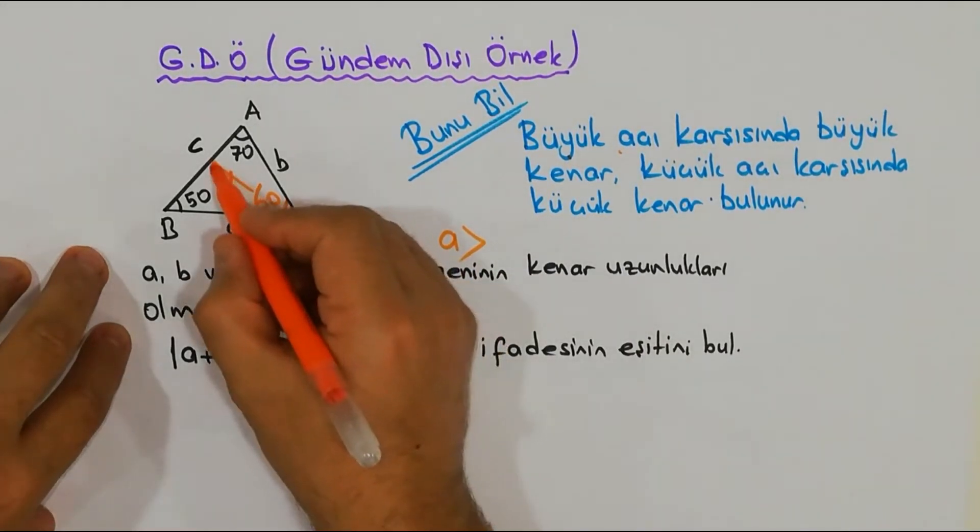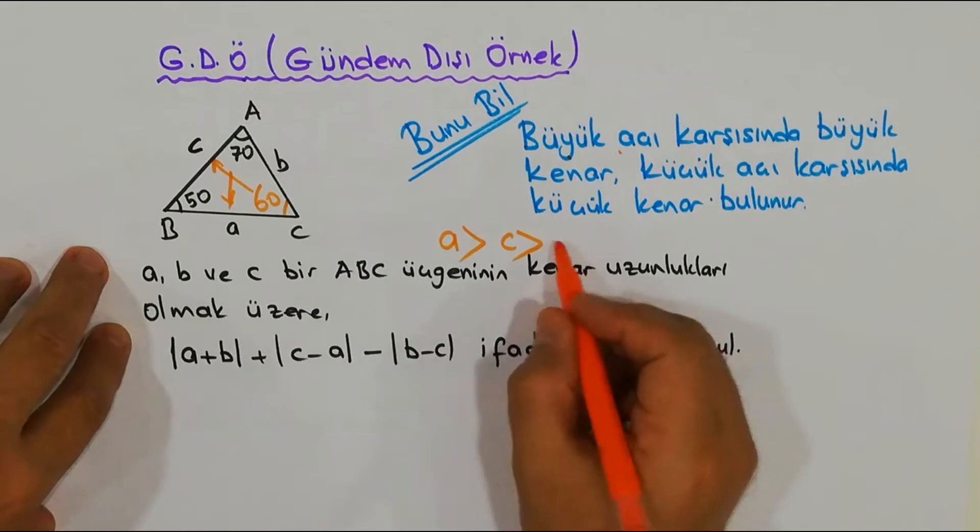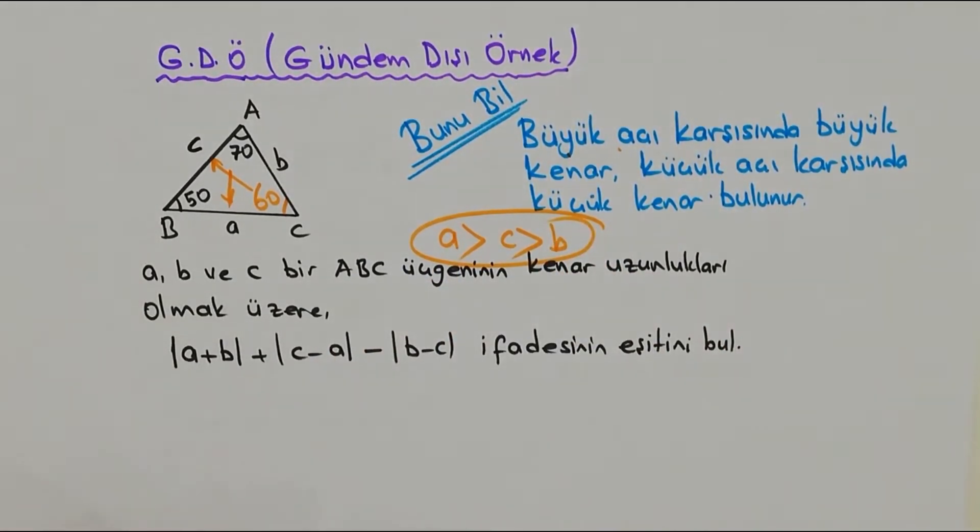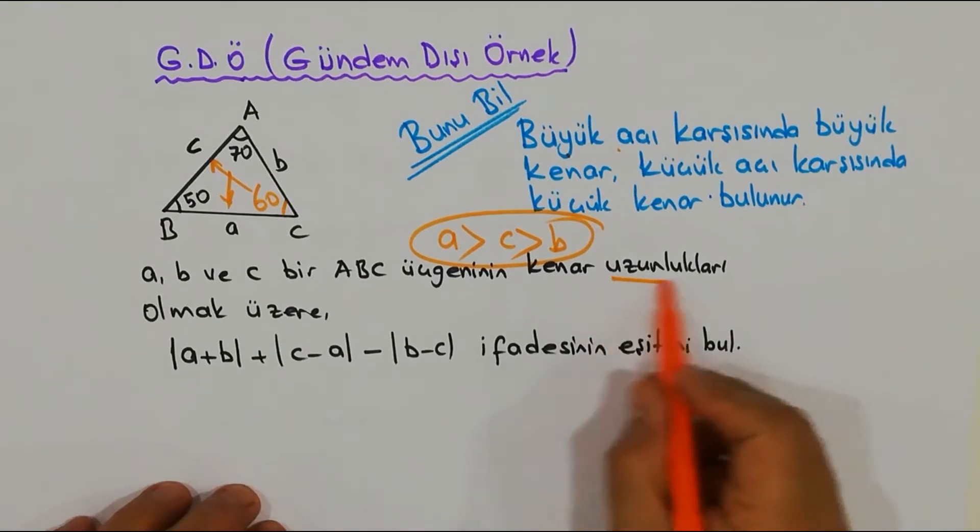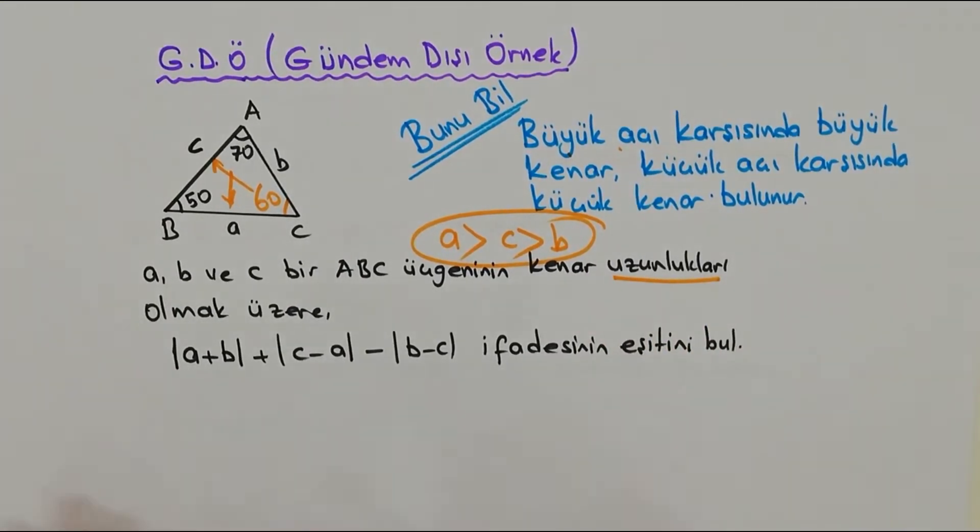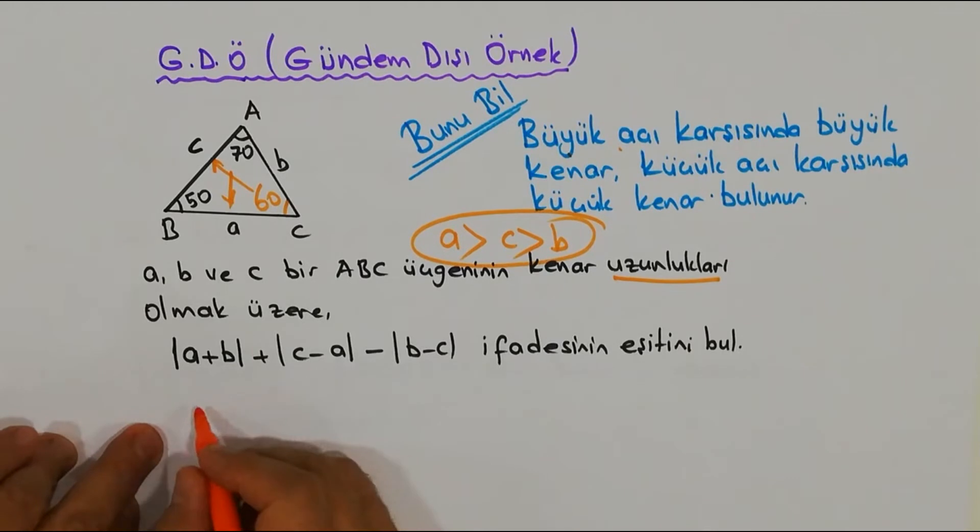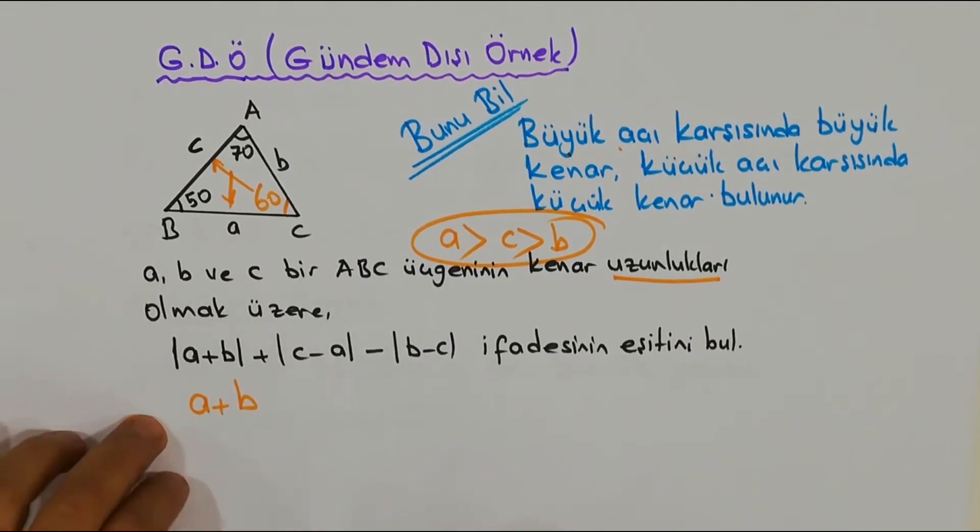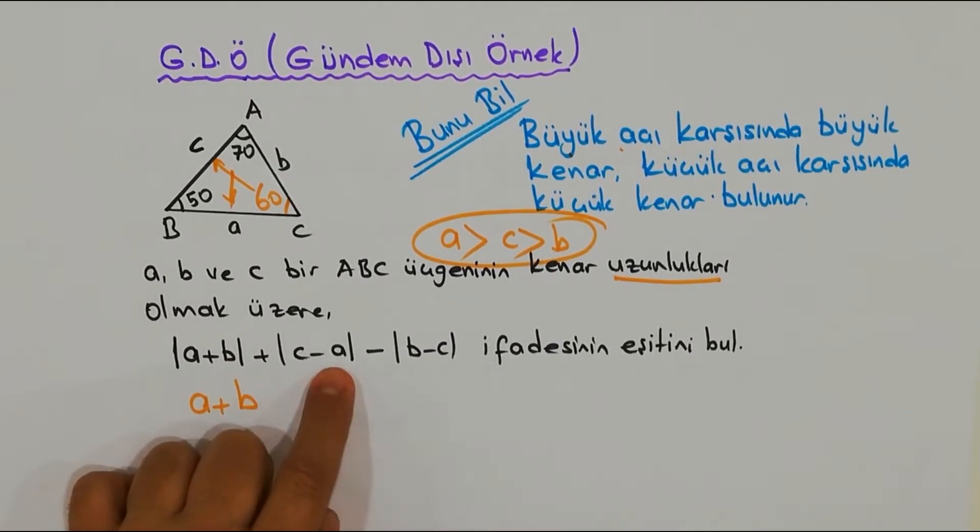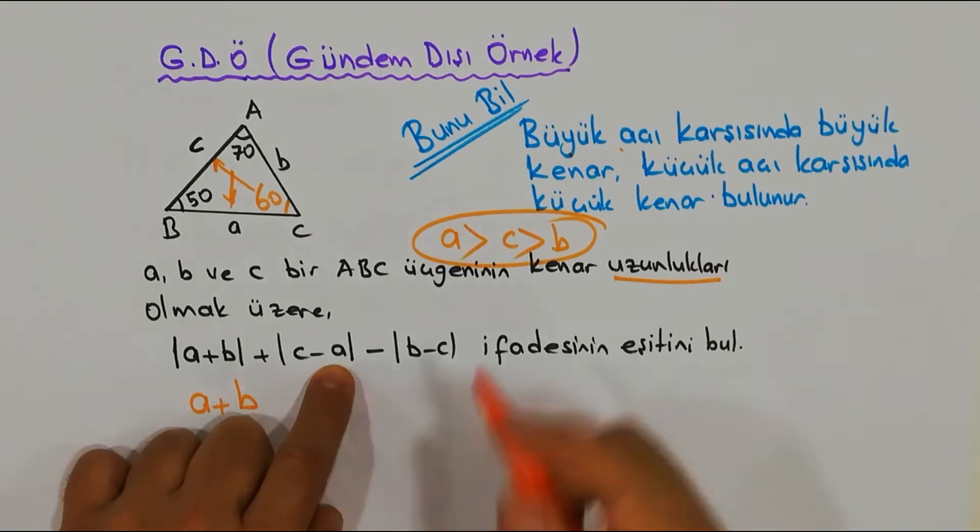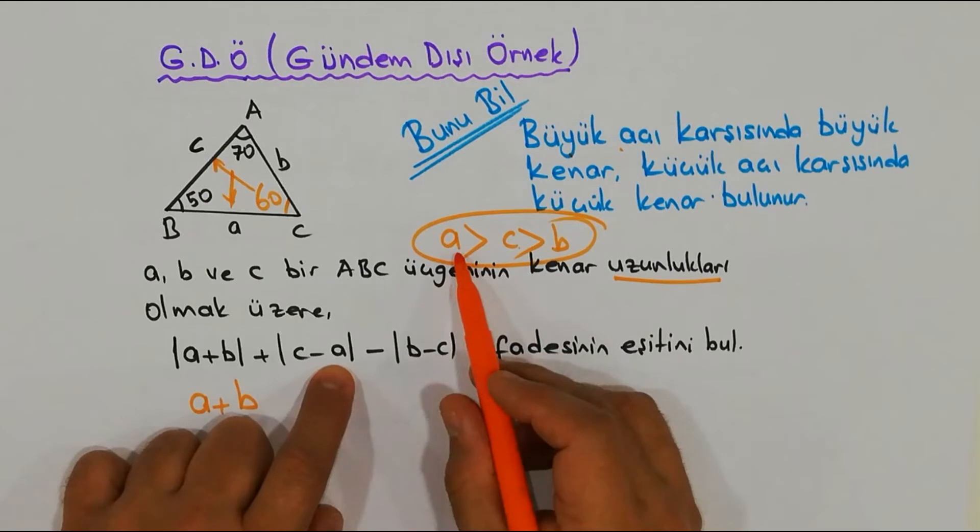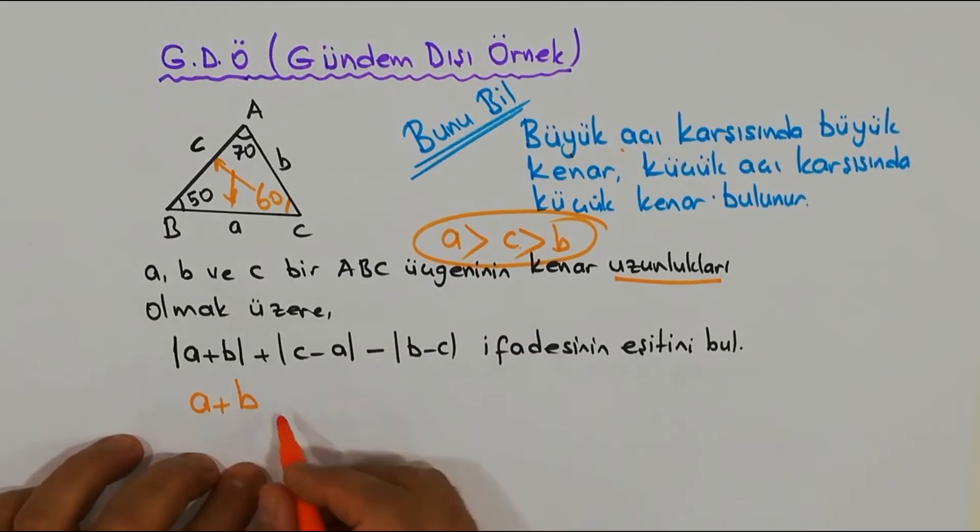Şu anda sıralamayı sorsam bana şunu der misiniz: Kardeşim en büyük kenar a, doğru. Sonra kim geliyor? c, doğru. Sonra kim geliyor? b, harika. Eşitsizliği bulduk. Şimdi |a + b|, buraya geçiyorum. a da b de kenar uzunluğu mu? Kenar uzunluğu negatif olma şansı var mı? Kesinlikle yok. O halde bu nasıl çıkar? Olduğu gibi çıkar.